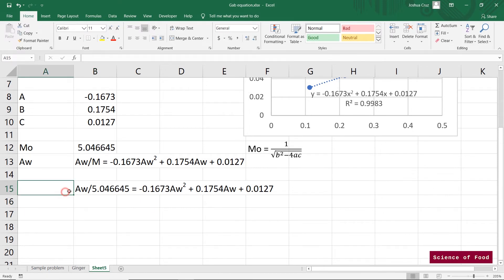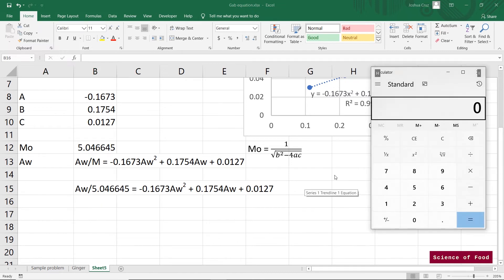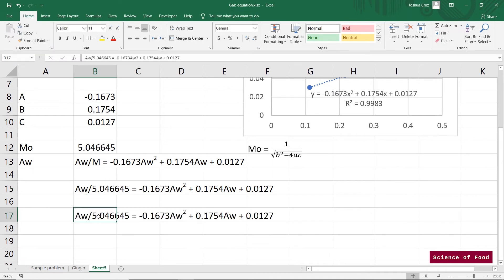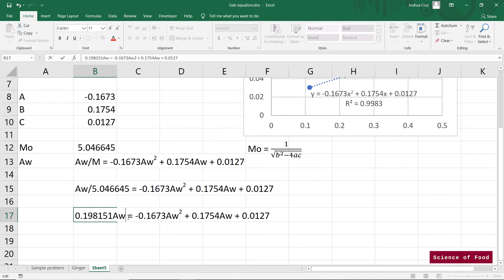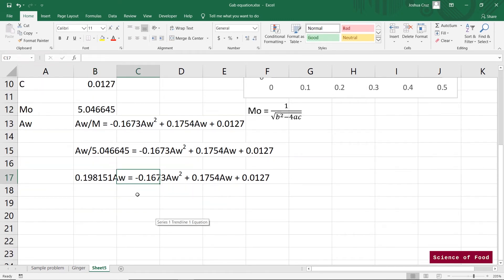The next thing we need to do is substitute moisture with our monolayer value, which is 5.04645. We can simplify this left side of the equation to... And to do that, I'll just divide 1 by 5.046645 because this is the same as 1 divided by 5.04645 multiplied by water activity. So that we'll have something like 0.198151 water activity. And why did I do that? This is because so that we can simplify this equation. So you can see that we can combine the water activity on the left side with the 0.1754 water activity.